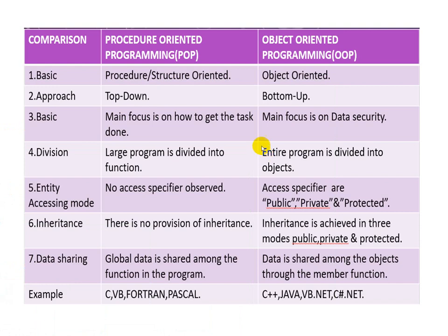In procedural oriented programming, a large program is divided into functions — a very big program is divided into small functions or modules, and then we call all functions. In object oriented programming, the whole program is divided into objects, and with the help of objects we call the functions. In procedural oriented programming there is no concept of access specifiers — global data is accessible anywhere, and local data is only accessible within the block.